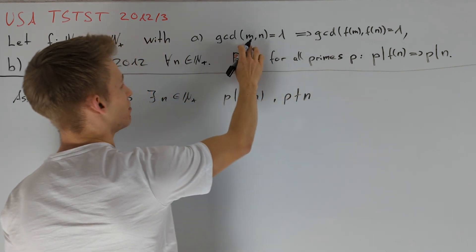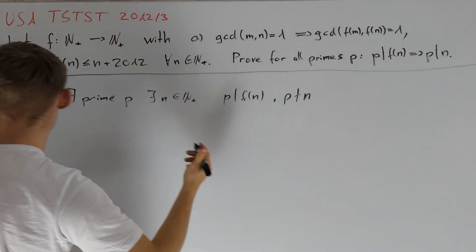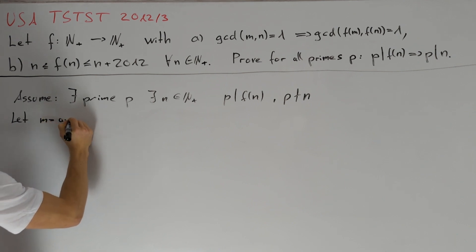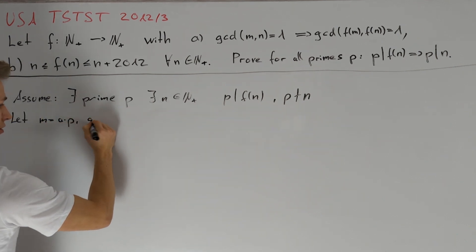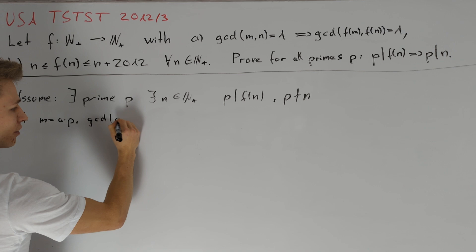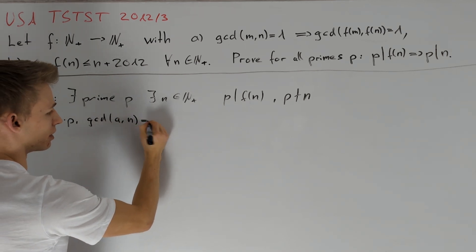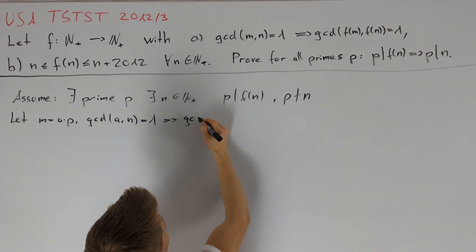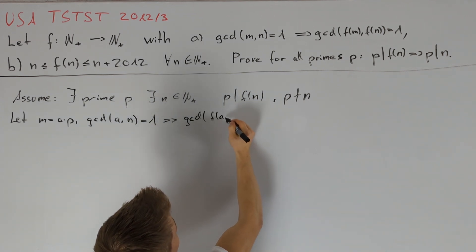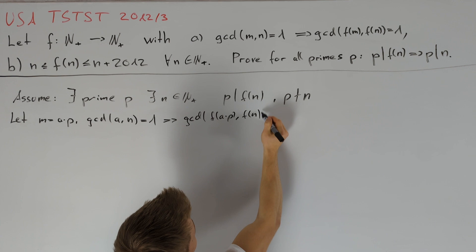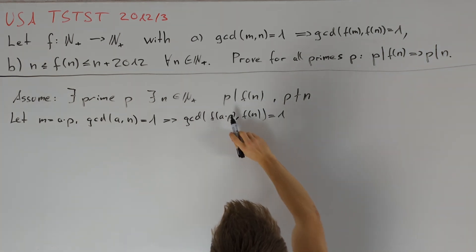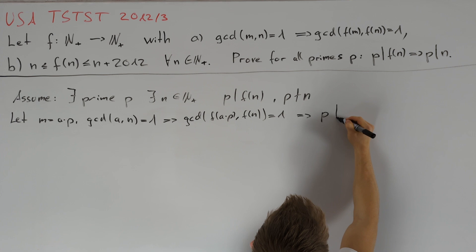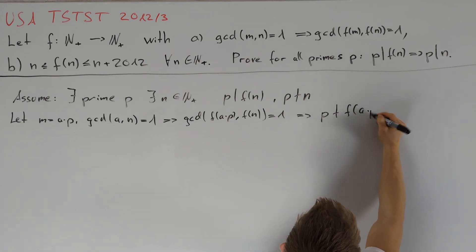We want to choose the value m in such a way that it is divisible by p. So let m = a·p, and the greatest common divisor of a and n should be equal to 1. Then we get that f(a·p) and f(n) are co-prime. Since p divides f(n), this implies that p does not divide f(a·p).